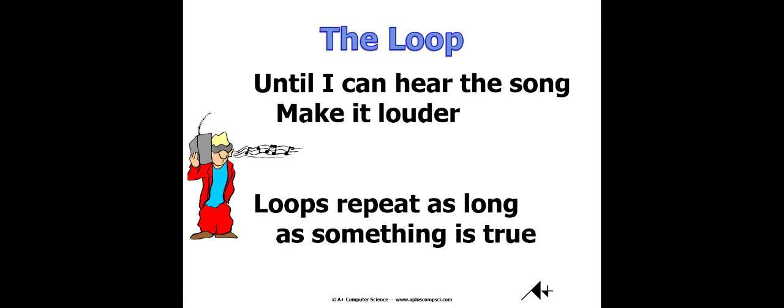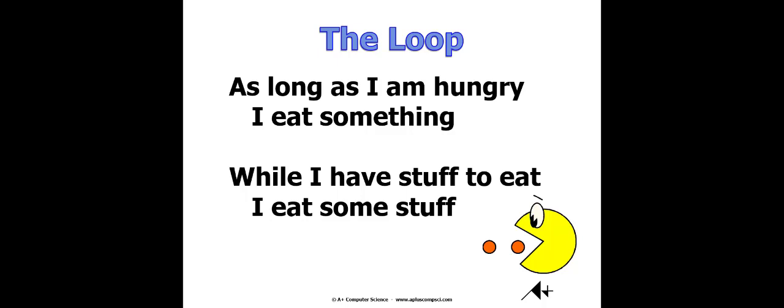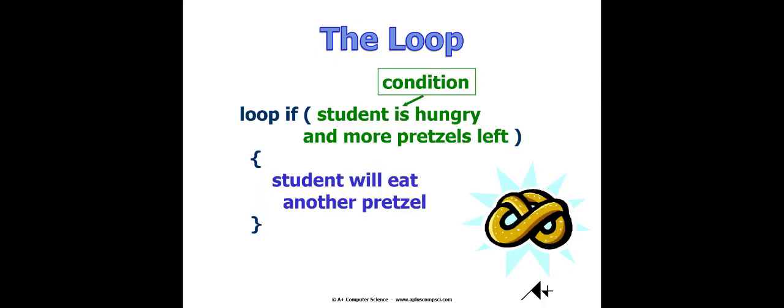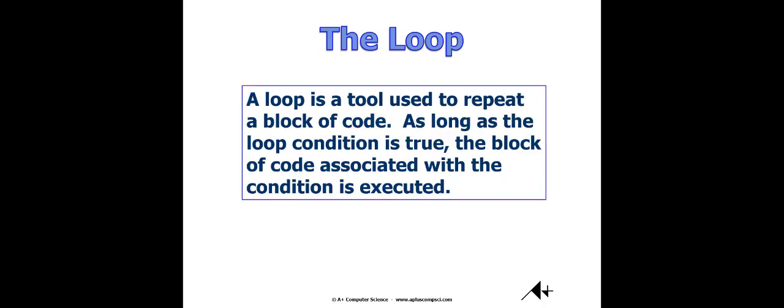The general idea with a loop is that it repeats a block of code as long as there's a condition that's true. As long as I'm hungry, I'm going to eat something. As long as there's something that is true, I'm going to continue to do something until that condition is false. Here I've got just a little pseudocode. This loop's going to execute if my condition is true. The condition is if the student's hungry, they're going to eat more pretzels — just a silly little example to get the point across.